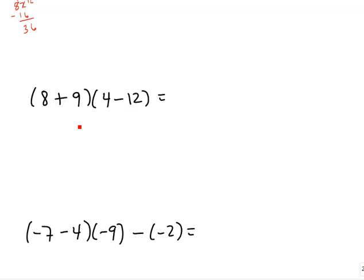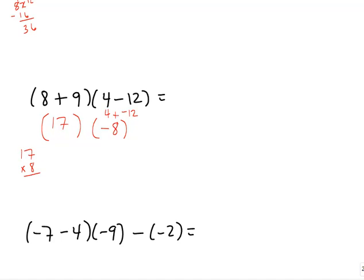Next example: two sets of parentheses. Simplify what's inside first, then multiply the two results. Eight plus nine is seventeen. Four minus twelve — change this to four plus negative twelve; opposite signs, so subtract: twelve minus four is eight, but since twelve was negative and larger, this eight is negative. So we get seventeen and negative eight. Multiplying: eight times seven is fifty-six, eight times one is eight plus five more is thirteen — so this is one hundred thirty-six, and a positive times a negative stays negative.